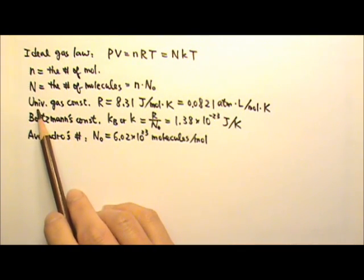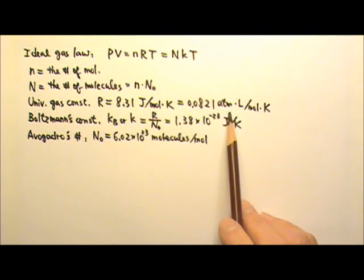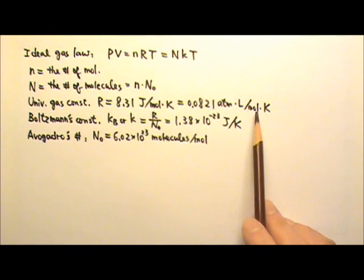You're familiar with the universal gas constant, R. In chemistry, you use 0.0821 atmospheres times liters per mole Kelvin.